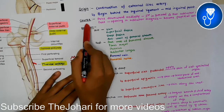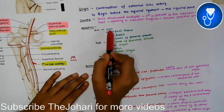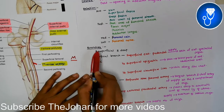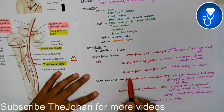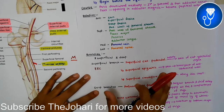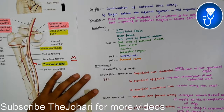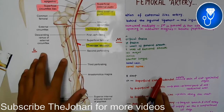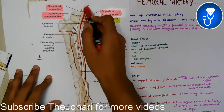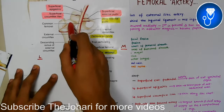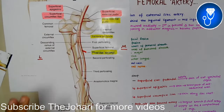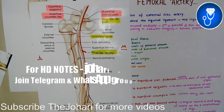Write the relations with headings: anterior relation, posterior relation, medial relation, and lateral relation. Then write branches: under superficial branches, list the three superficial branches; under deep branches, list the deep branches. That is how you should write it for a university short note exam. Include a diagram showing the femoral artery, the femur bone, and all the branches labeled.